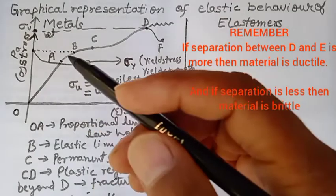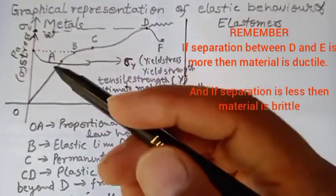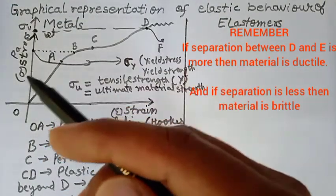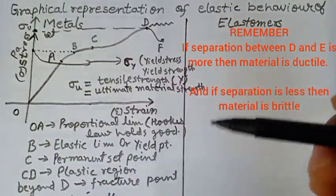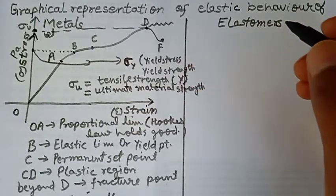And their elastic constant will be greater if they have more slope. Now there is another category which is called elastomers.